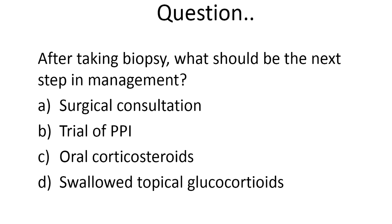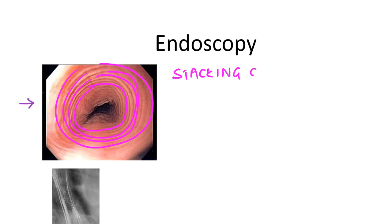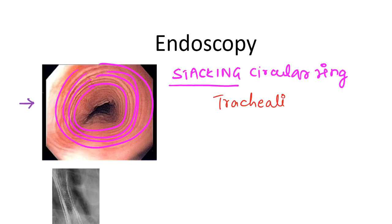Before answering, you should know the diagnosis, which is based on the esophagoscopy findings. You can note circular rings in the esophagus — they appear stacked one over another, called a stacking circular ring appearance. When performing endoscopy you may wonder whether you are looking at the esophagus or the trachea, since the trachea also shows circular rings. This is why the condition is also called trachealization of the esophagus — the esophagus looks like a trachea.